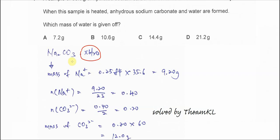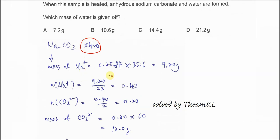In this question the percentage of the sodium ion is already given. So the mass of sodium ion, we need to use the percentage times the total mass, which is 35.6. So we therefore will get 9.2 grams.